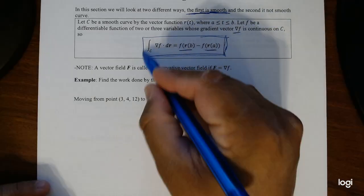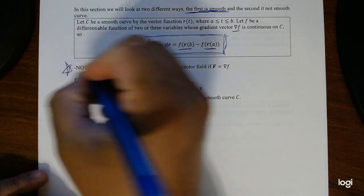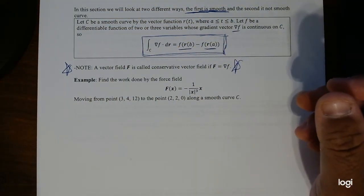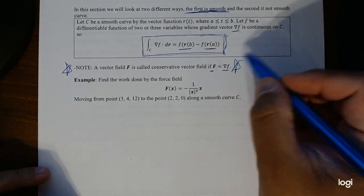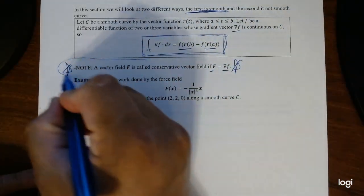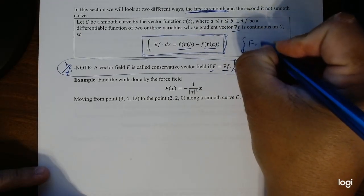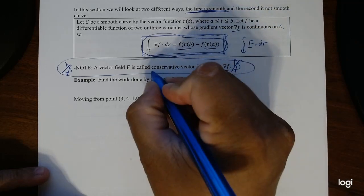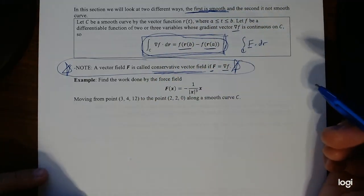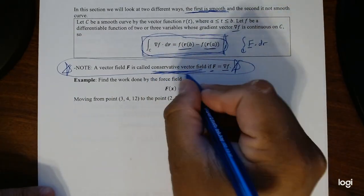It's just the function itself evaluated at the vector, which makes line integrals much easier to deal with. Now there's one very special definition we'll be using throughout this section: something called a conservative vector field. A vector field F is called a conservative vector field if F itself is equal to the gradient of f — that is, if the vector field equals the partial derivatives of the function itself.